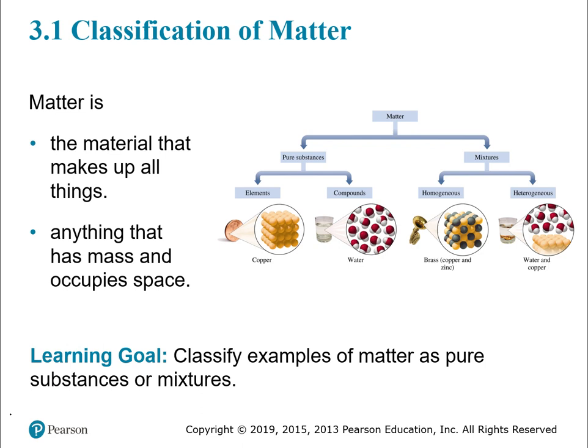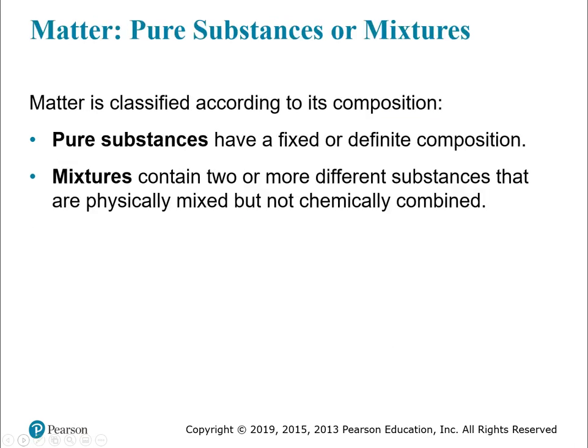We're going to start off by classifying matter. We talked about matter in the first chapter — it is the material that makes up all things. It's anything that has mass and occupies space. It's a pretty big category, so we're going to give you some vocabulary words to break down what matter is, and then we'll talk about some other things to relate to matter.